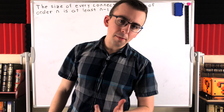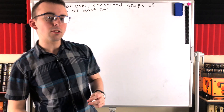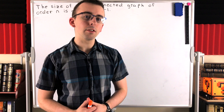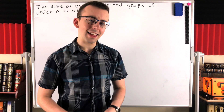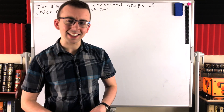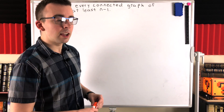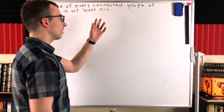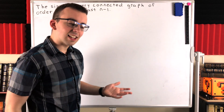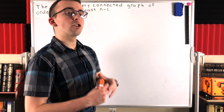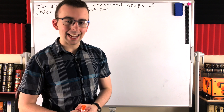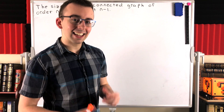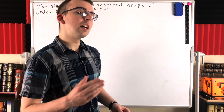So for a graph to be connected, it's got to have at least one less edge than it has vertices. It might have more edges than that, but it's got to have at least that many. For those of you who are familiar with tree graphs, you might notice that what this is kind of saying is that tree graphs are minimally connected graphs — you're not going to get a less connected graph than a tree graph.